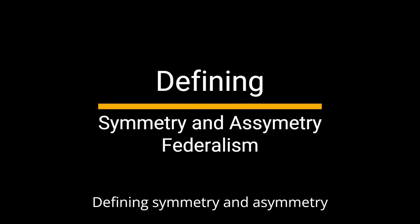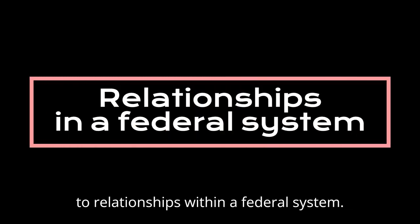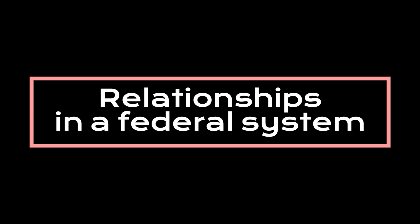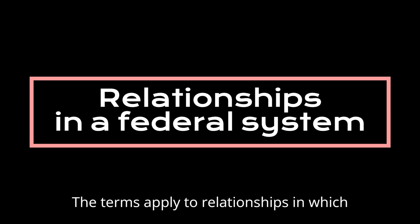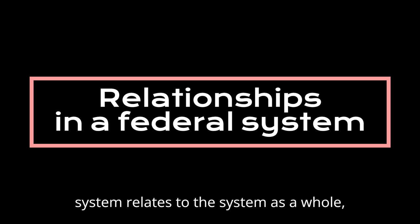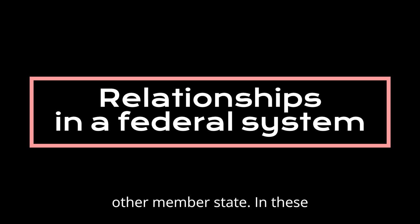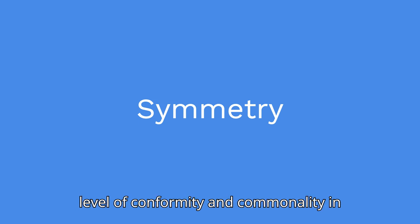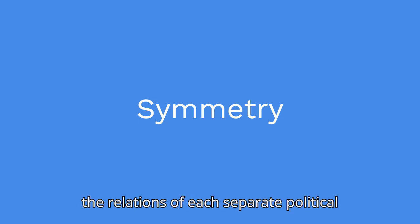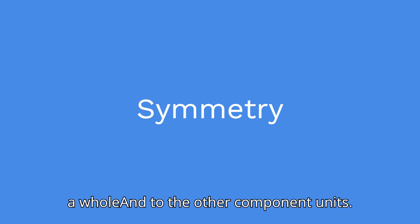Defining Symmetry and Asymmetry in Federalism. The terms symmetry and asymmetry are applied to relationships within a federal system. They apply to relationships in which a member state within a federal political system relates to the system as a whole, to the federal authority, and to each other member state. In these relationships, symmetry is defined as the level of conformity and commonality in the relations of each separate political unit of the system to both the system as a whole and to the other component units.